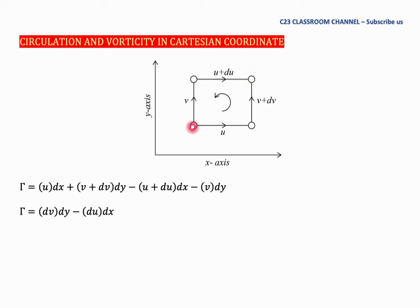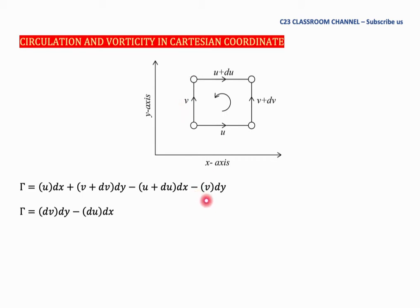Then the molecule travels from here to here. The velocity u works from left to right, so because the element is now reversed relative to the velocity, we have negative (u plus du) and the distance traveled remains dx. Then the molecule travels from here to here; the velocity is now negative, so we write negative v, and the distance traveled is dy. Solving this equation, we get gamma equal to dv·dy minus du·dx.